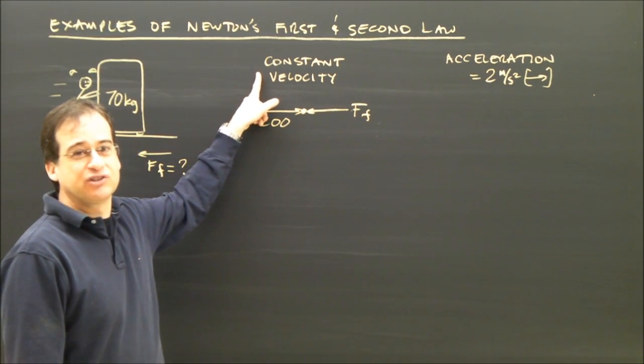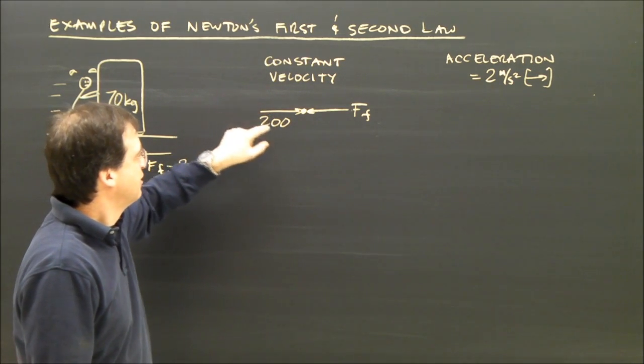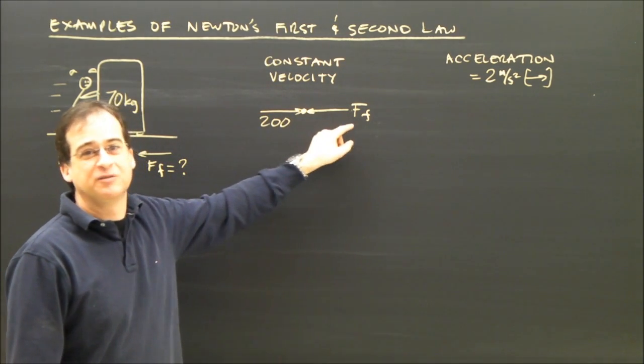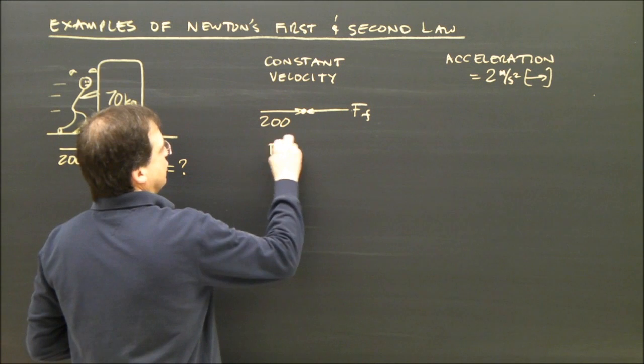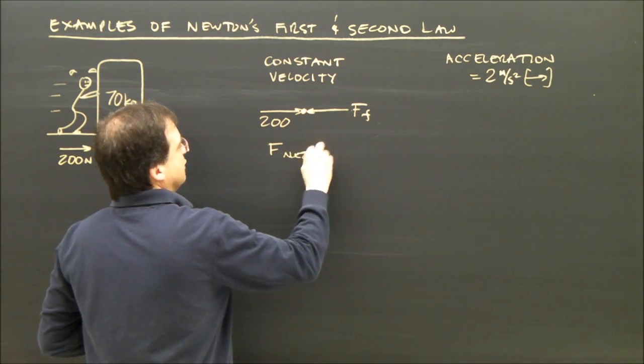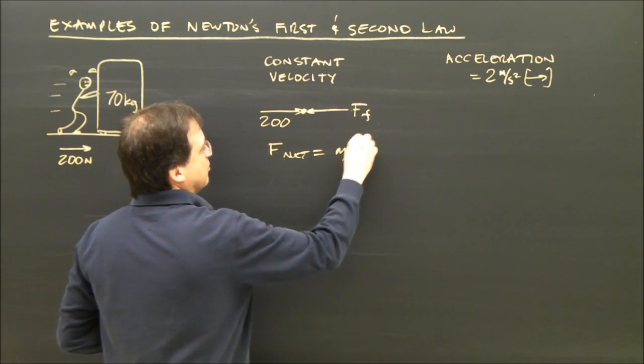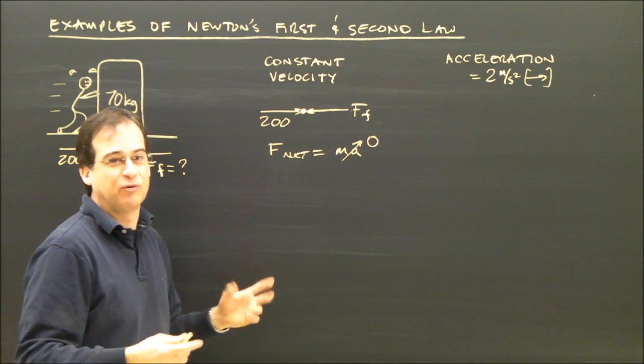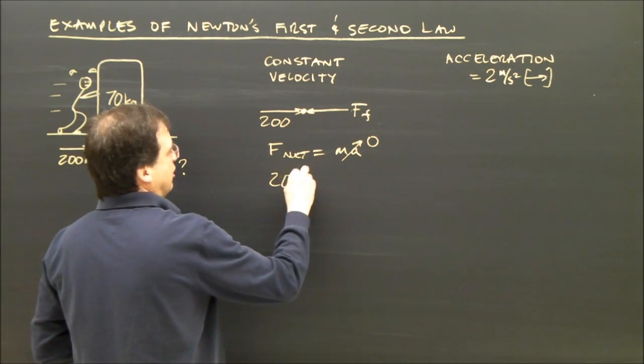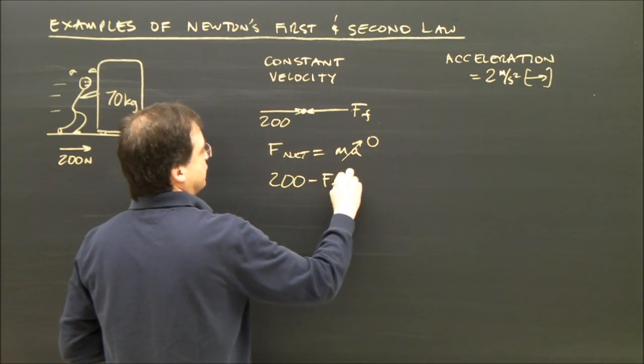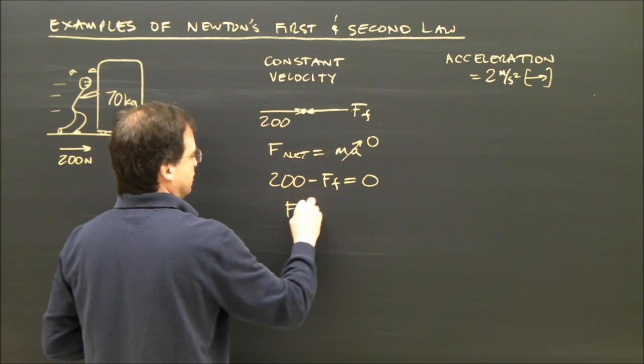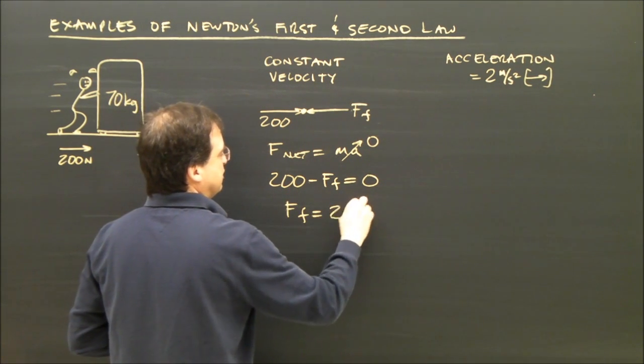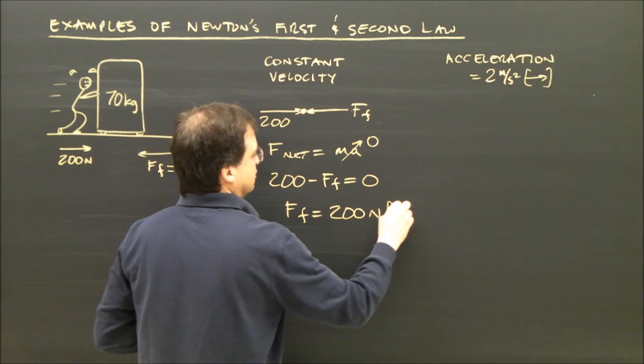Constant velocity means Newton's first law, the forces must be balanced. This force to the right must be balanced by the force to the left. You could use Newton's second law and say F net equals ma, but it's going to be zero. The net force is going to be zero. So 200 minus the force of friction equals zero. The force of friction must be 200 newtons to the left.